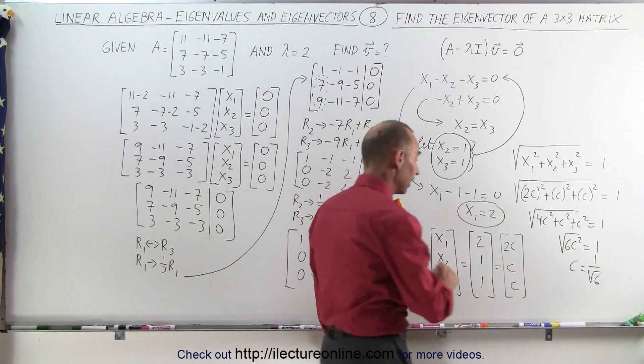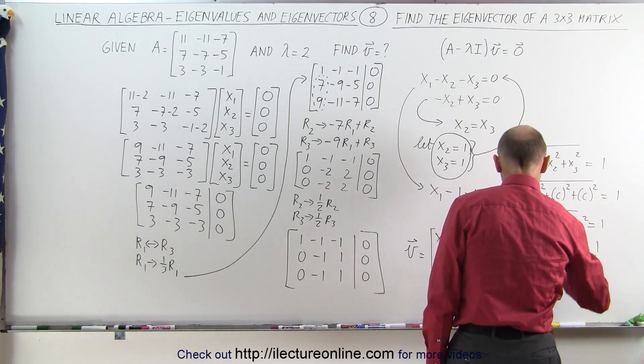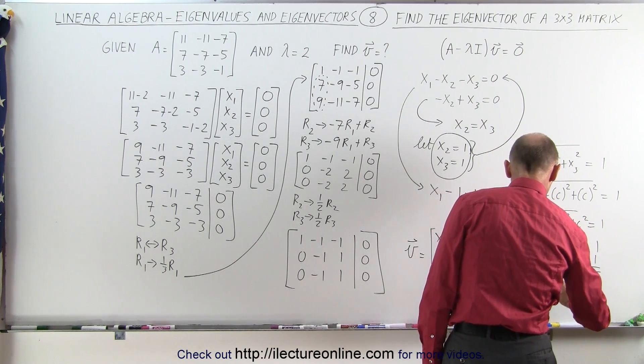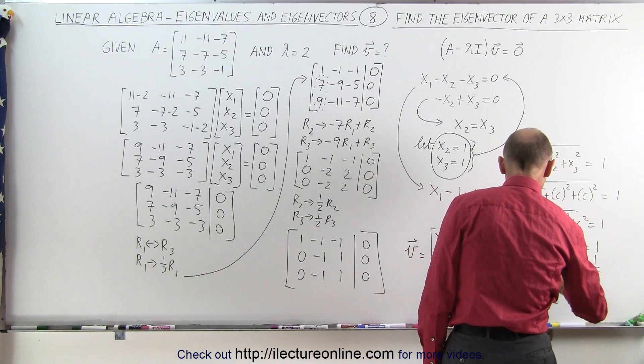In other words, if I want to normalize this vector, I can say this is equal to 2, c is 1 over the square root of 6. c, 1 over the square root of 6.